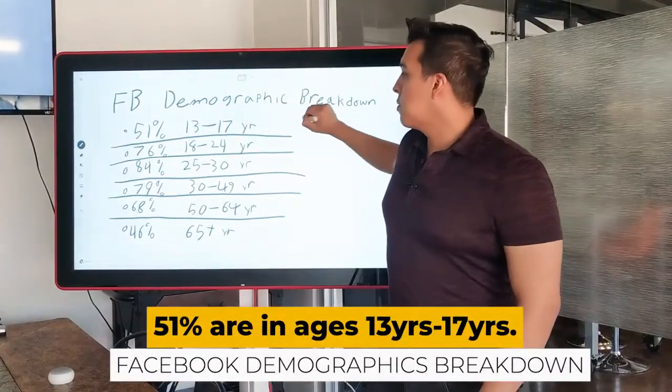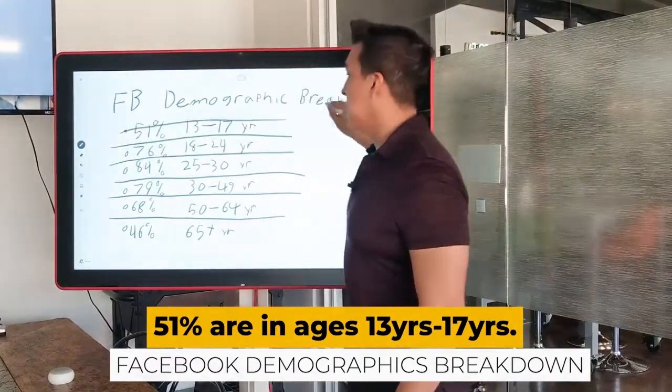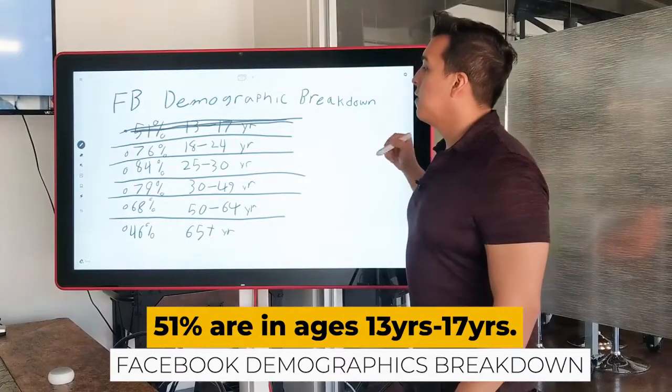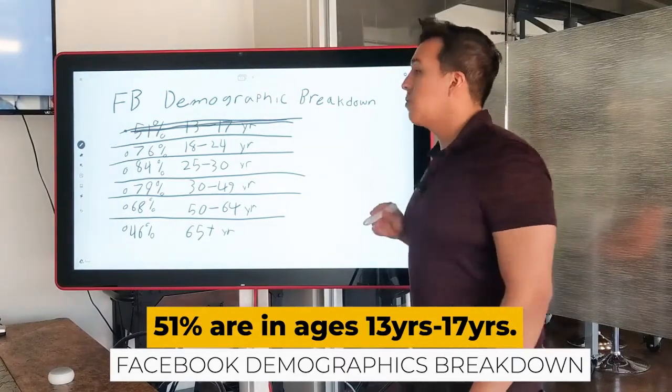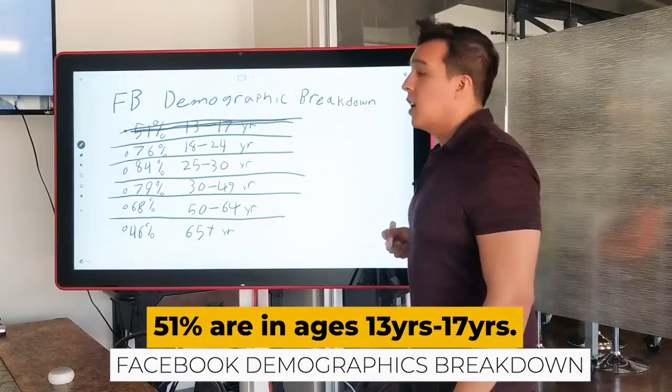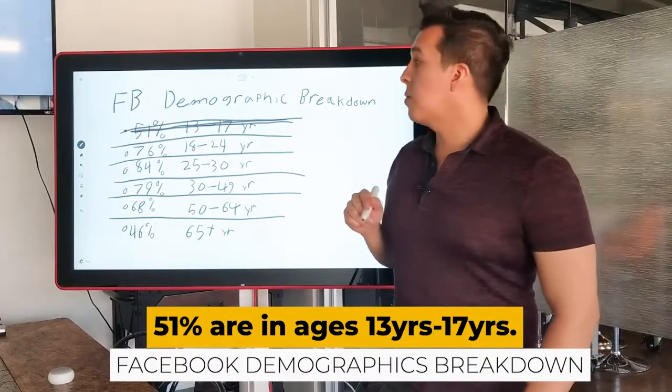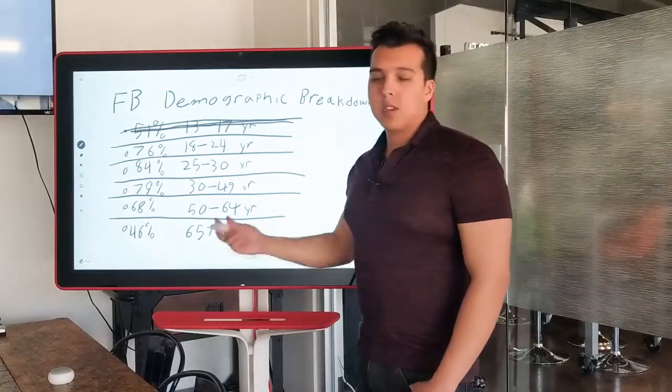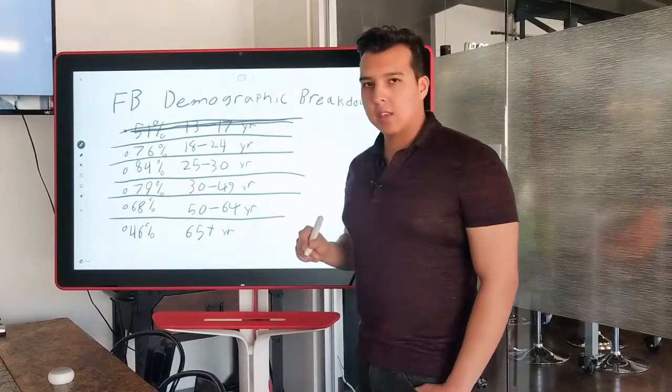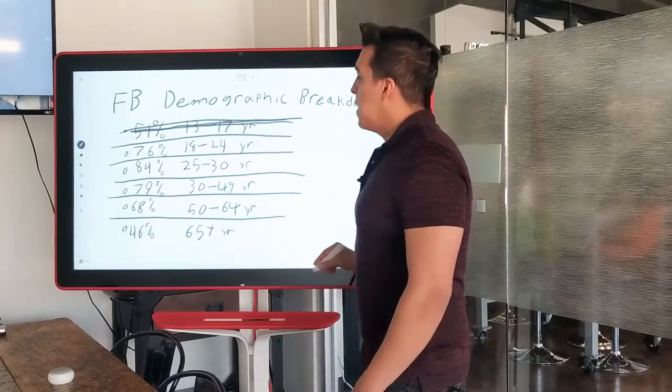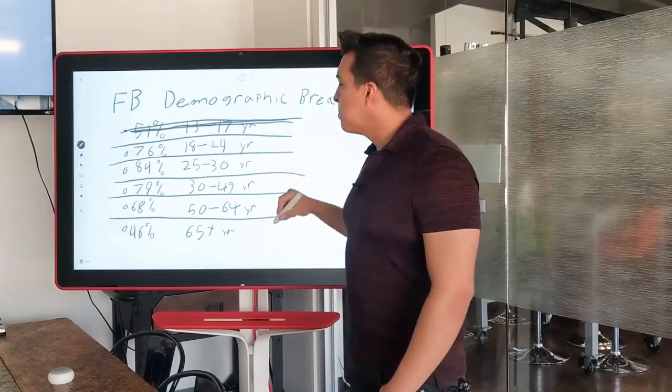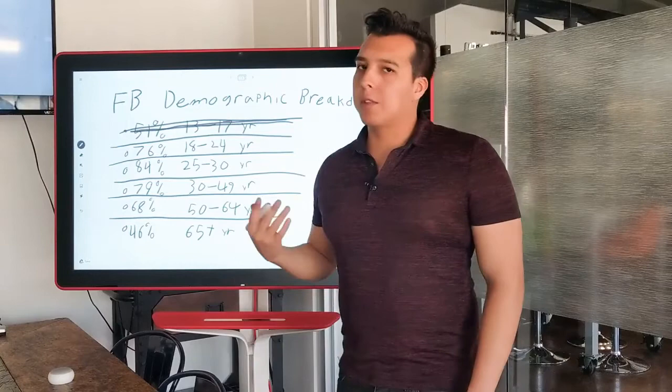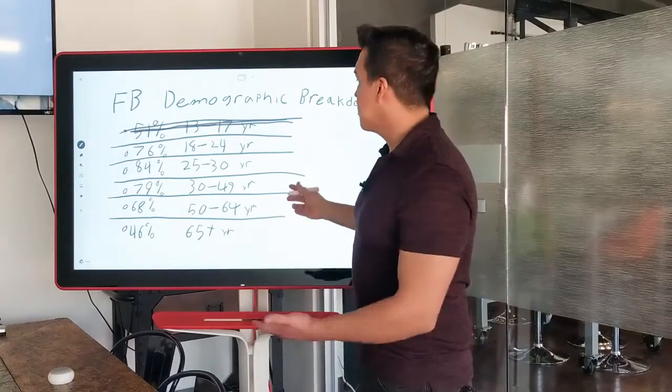When it comes to the demographics: 51% of 13 to 17—that's probably not your demographic. 76% of 18 to 24 year olds are present on Facebook. That's kind of a surprise to a lot of people because usually people think everyone is on Instagram or WhatsApp, but that's not always the case. This is a very young demographic, but keep in mind that as time goes on, they're gonna grow up and eventually be 25 to 30, get married, and start thinking about buying a home.